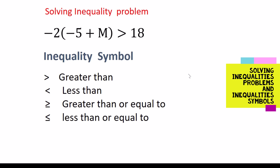What we have here is minus 2 times minus 5 plus m, and this sign is a greater than. So in an inequality expression, we use a greater-than sign. This sign you see here is telling you whatever is on the left side is greater than 18, and that's how we express inequality.